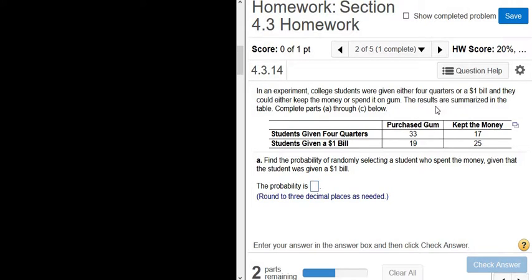In this problem, we have a table, and it looks like students were given four quarters or a dollar. And then we analyzed whether or not they used the money to buy gum or they kept the money. For example, here it says purchase gum. So we had 33 students purchase gum, and they were given four quarters. Then we had 19 students purchase gum, and they were given a dollar bill. Likewise, here we have kept the money. So find the probability of randomly selecting a student who spent the money given that the student was given a one dollar bill.